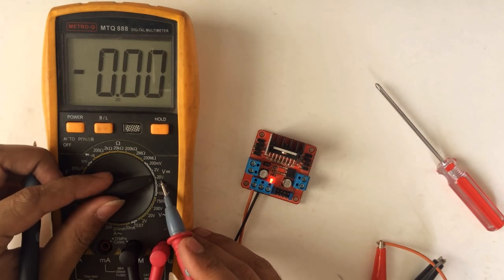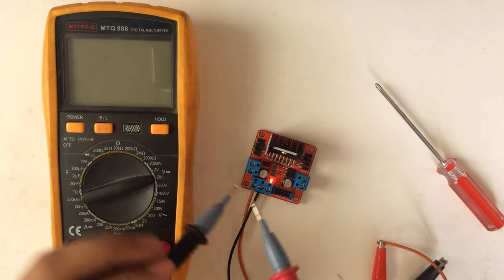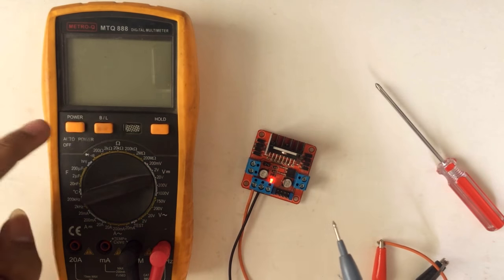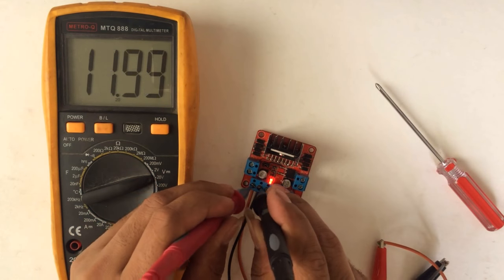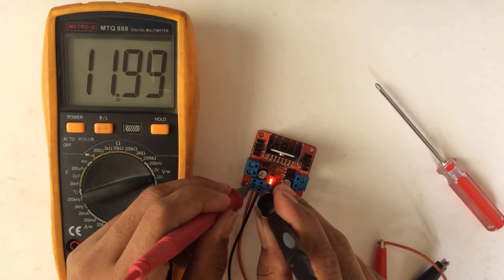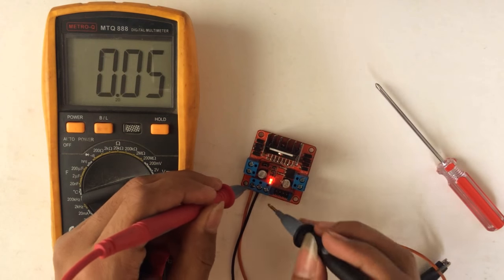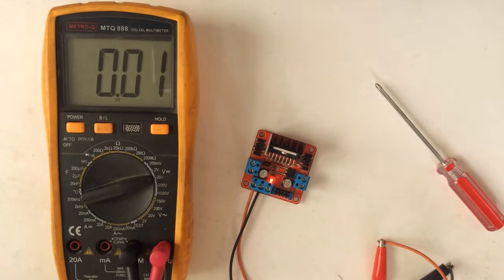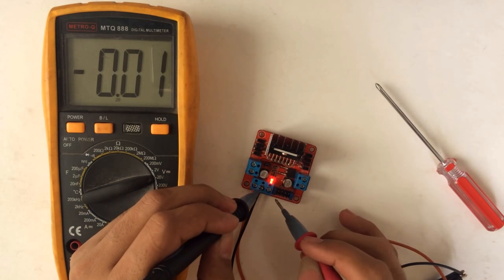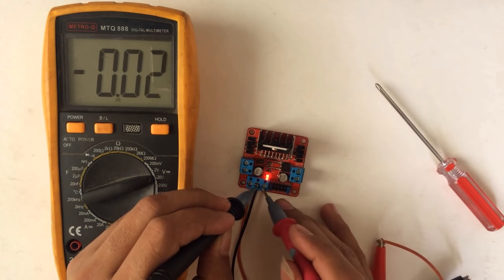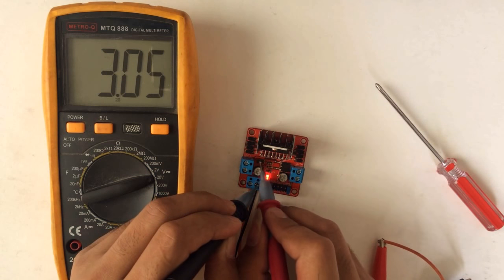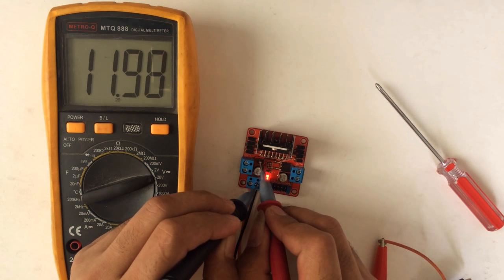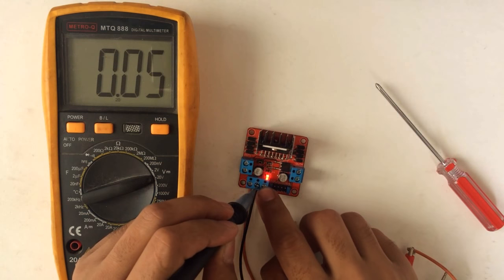Set the multimeter to 20 volt since we will be measuring 12 volt. We have 11.99 volt which is around 12 volt. And let's test out how much we have in 5 volt output. We have 4.98 volt and in connector we have 11.98 volt.